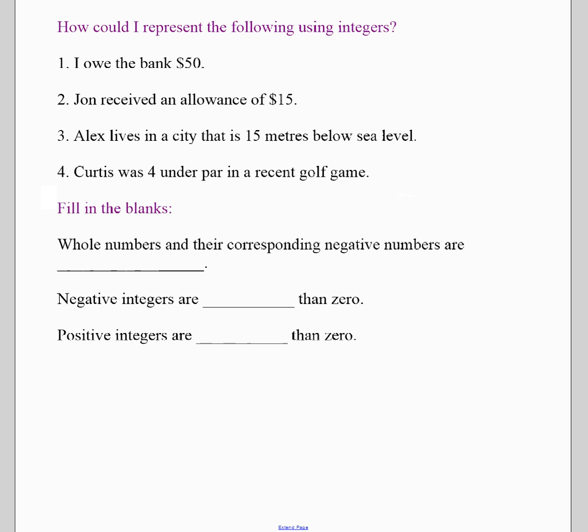So let's look at these following real-life type examples. If you owe the bank $50, that means you are at negative $50. If you get an allowance of $15, that means you're at positive $15. If you live in a city 15 meters below sea level, you're at negative 15 meters. If you're four under par, you're at negative four.